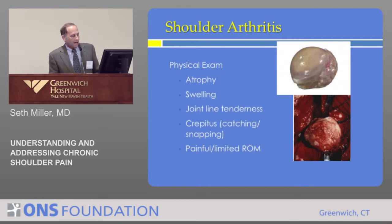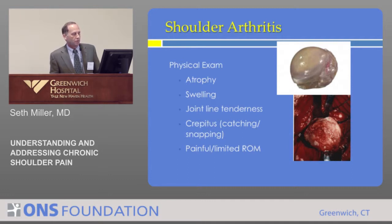When you examine these patients, often the muscles have atrophied because they can't use the shoulder normally. There may be swelling, and there's typically tenderness at the joint line. People complain of a catching, snapping phenomenon due to the abnormal surfaces, and they start to lose range of motion.